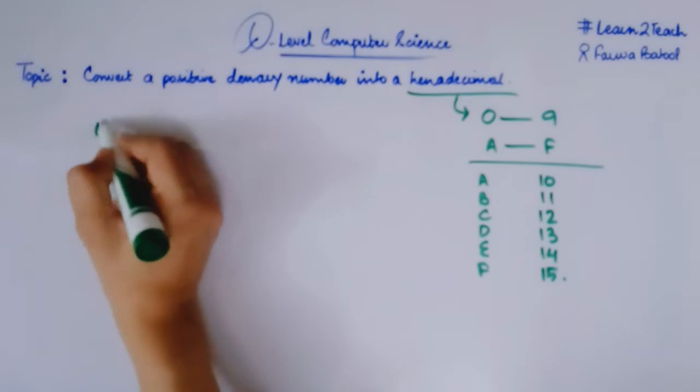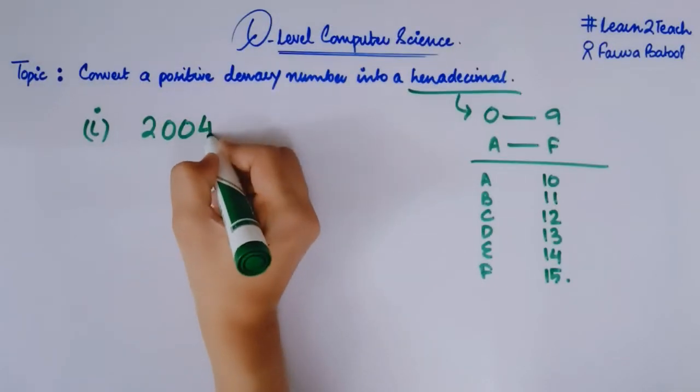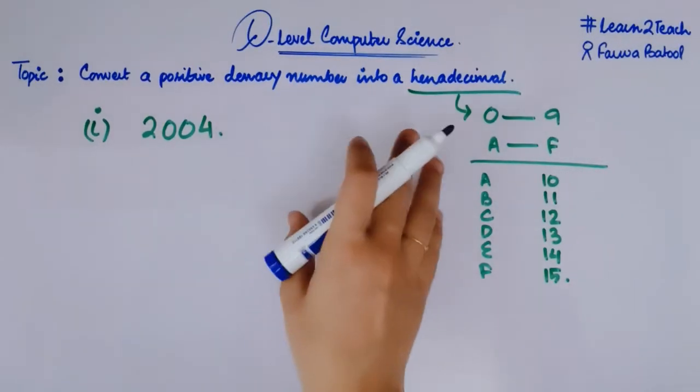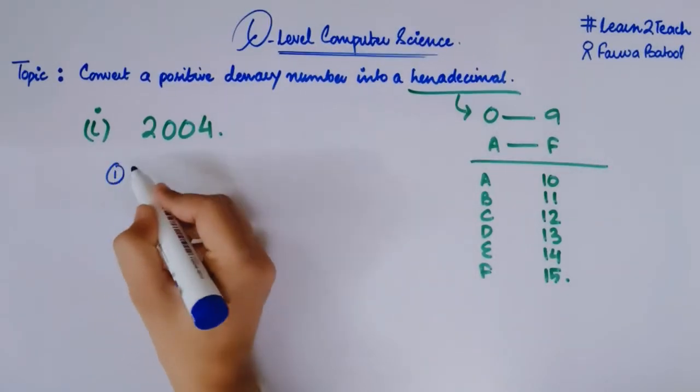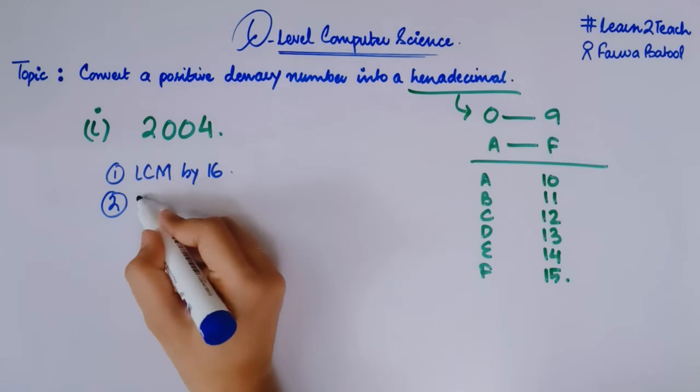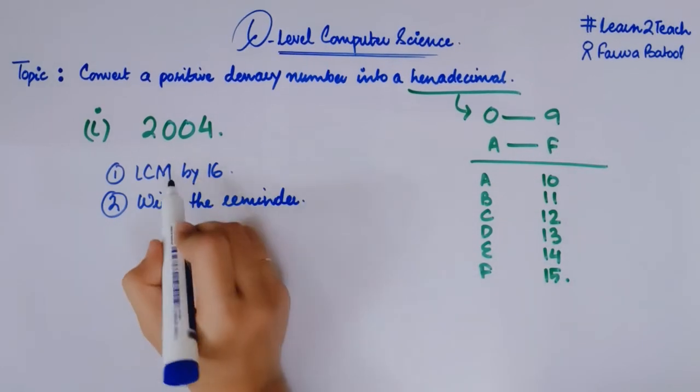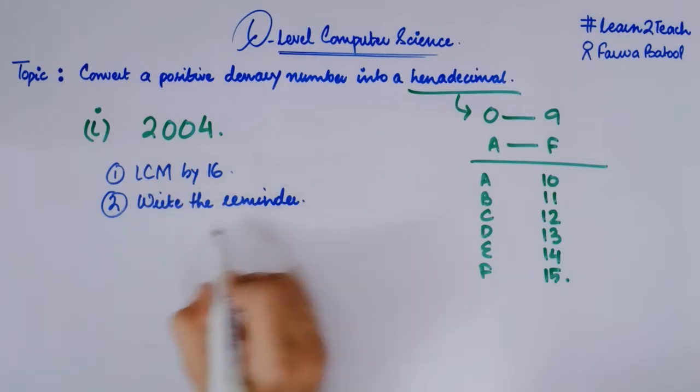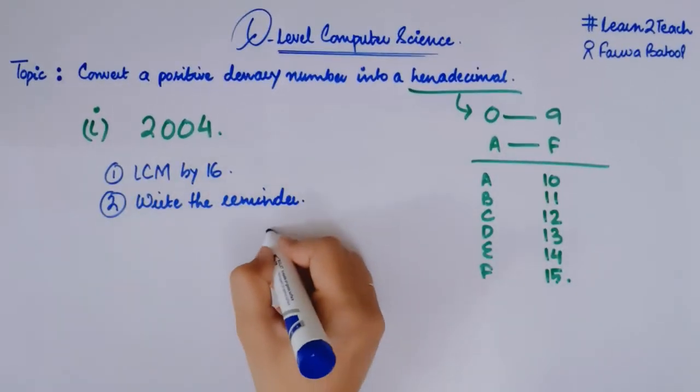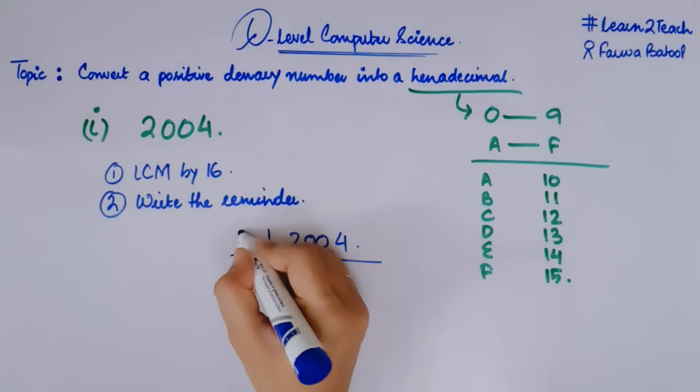Let me take my example number one. I have a denary number that is 2004 and I need to convert this number into a hexadecimal one. To convert this number into hexadecimal what do I need to do? The very first step is take LCM by 16. And the second thing we need to remember is write the remainders in each step. You need to take LCM by 16 and you need to write the remainders in each of these steps. So let me do the working over here.